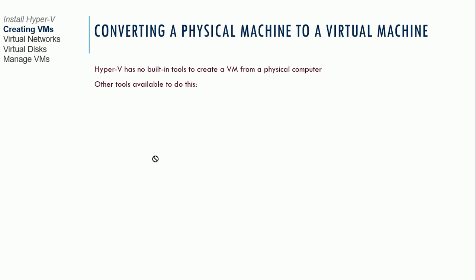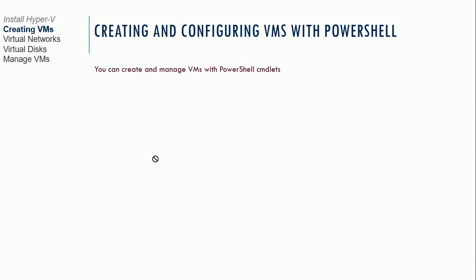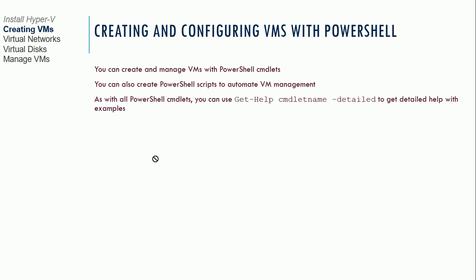You can also convert a physical machine to a VM. Hyper-V has no built-in tools for this, but Microsoft System Center Virtual Machine Manager and the free utility Disk2VHD can create a VHD file from a physical hard drive. This is useful when migrating physical servers to a virtualized data center. You can also create and manage VMs with PowerShell cmdlets, scripting VM management automation. Use Get-Command *VM* to see all available VM-related commands.